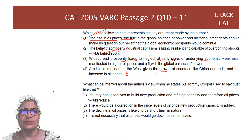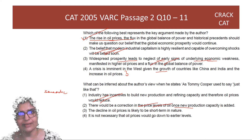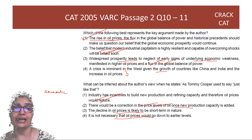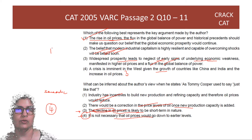Question: What can be inferred about the author's view when he uses the 'just like that' expression? It's sarcastic — it is not going to work out. Option 1 says there are incentives to build capacity — sarcasm, so option 1 is wrong. Option 2 says there would be a correction in oil prices once new production capacity is added — again, sarcasm, wrong. Option 3 says the decline in oil prices is likely to be short-term — perhaps, but we don't know. Option 4 says oil prices will not go down to earlier levels — this is better. Between 3 and 4, option 4 is stronger. Answer is option 4.